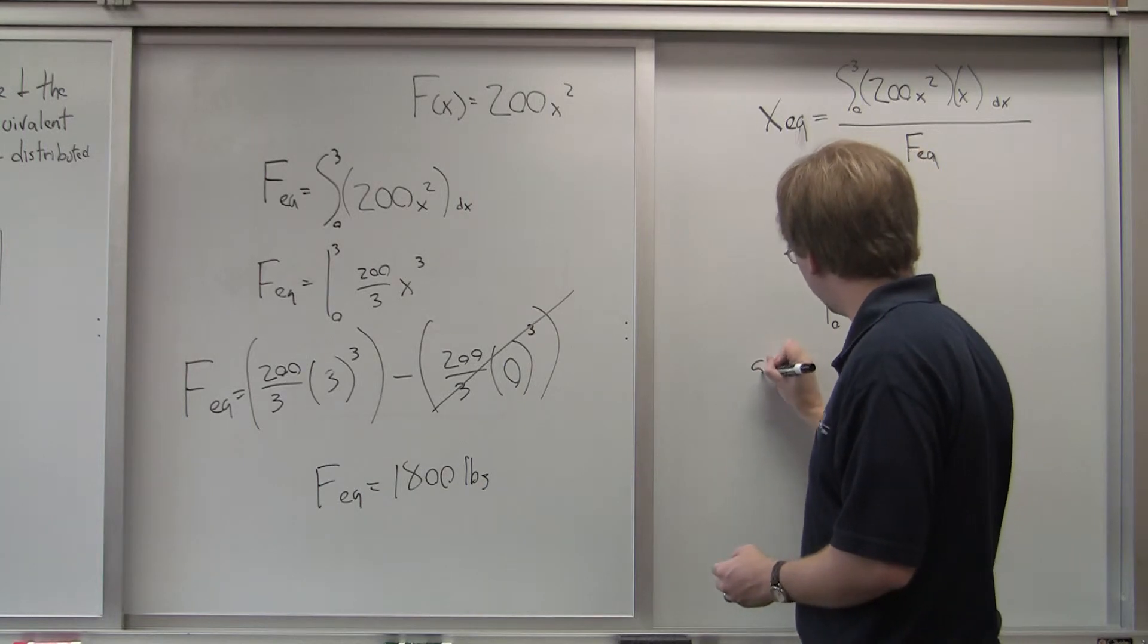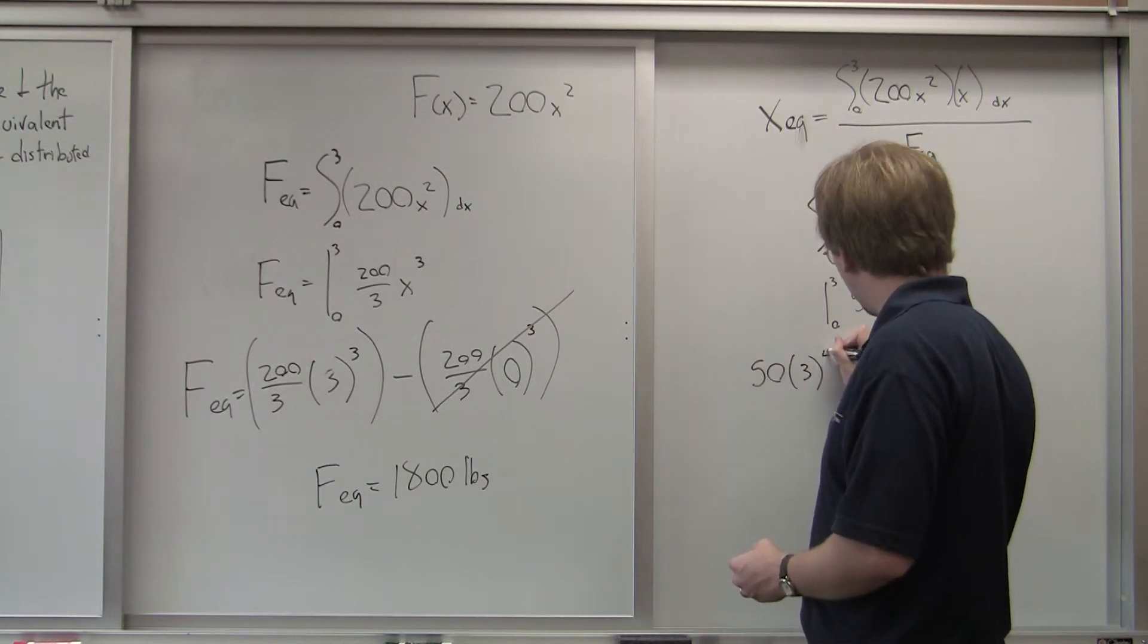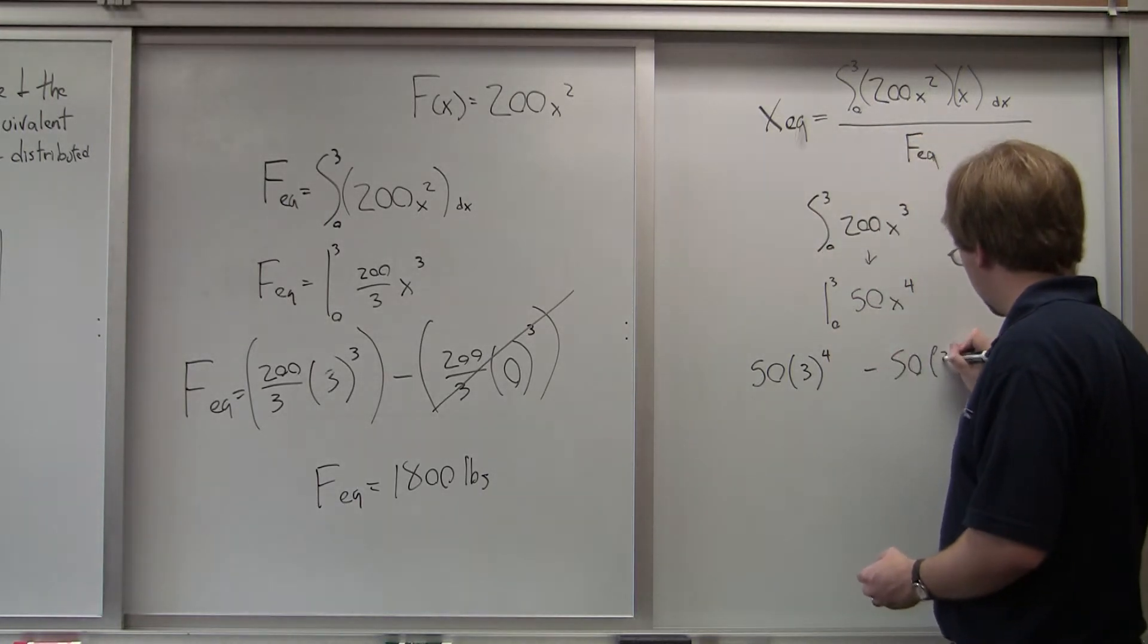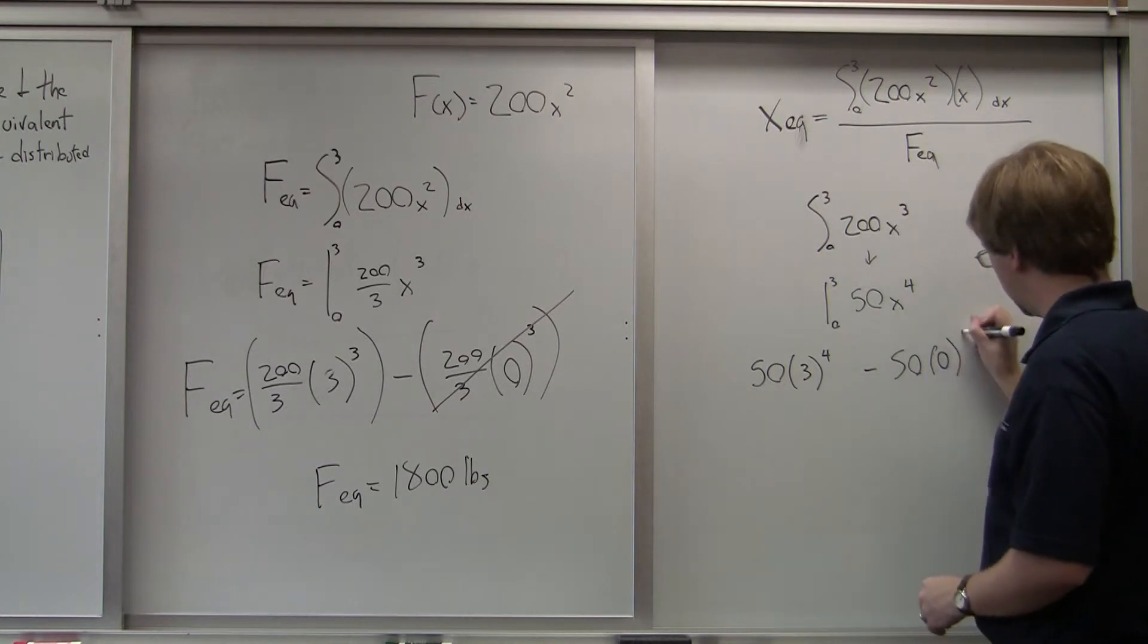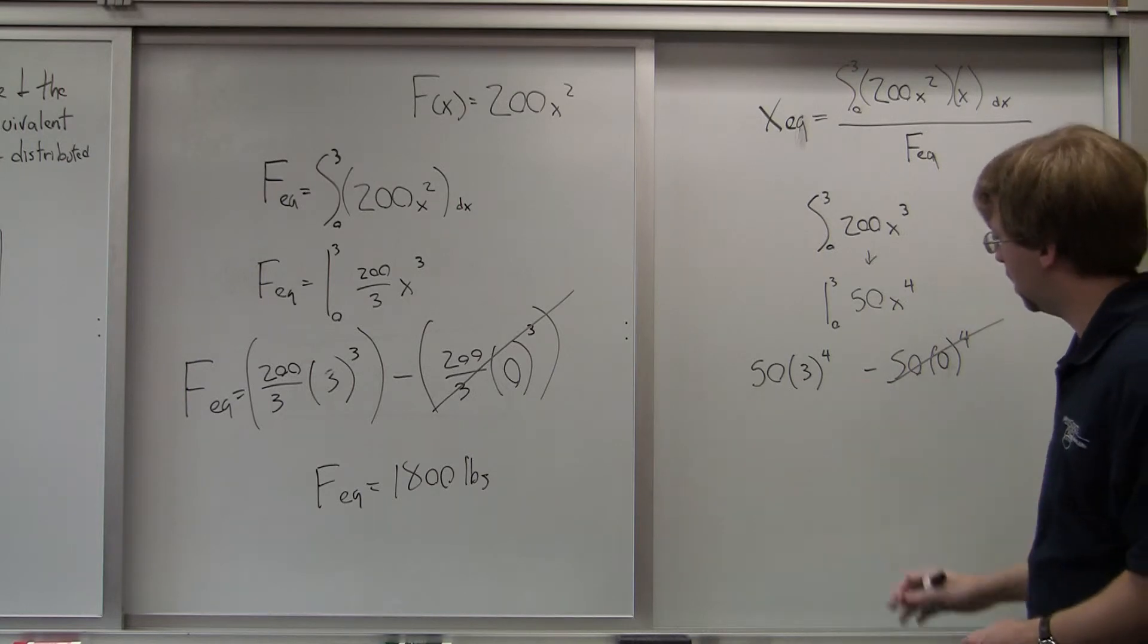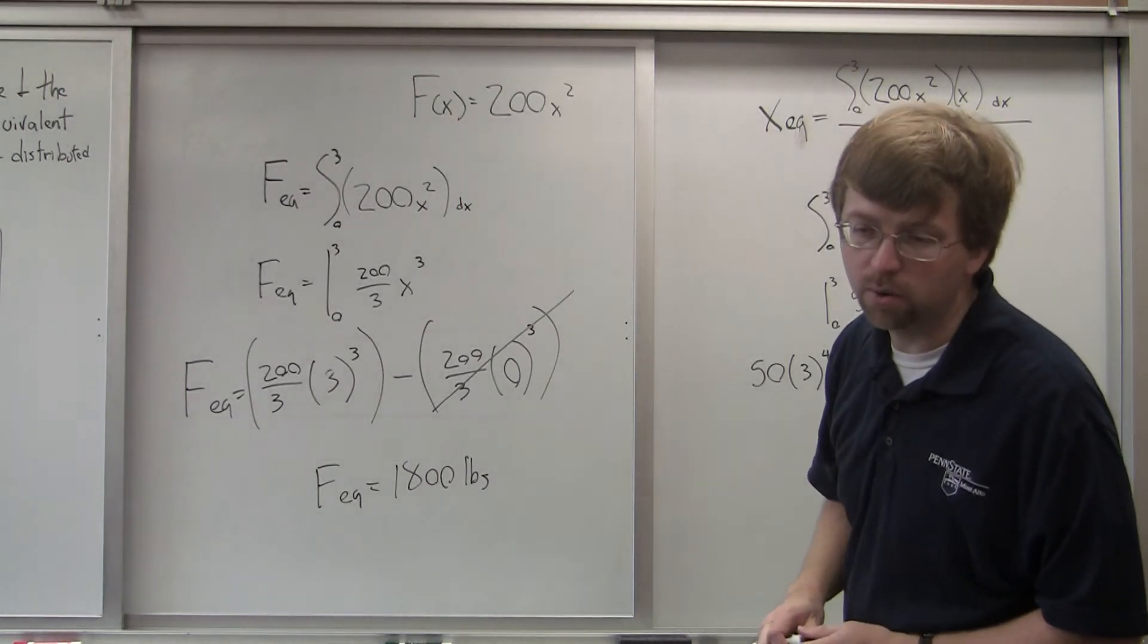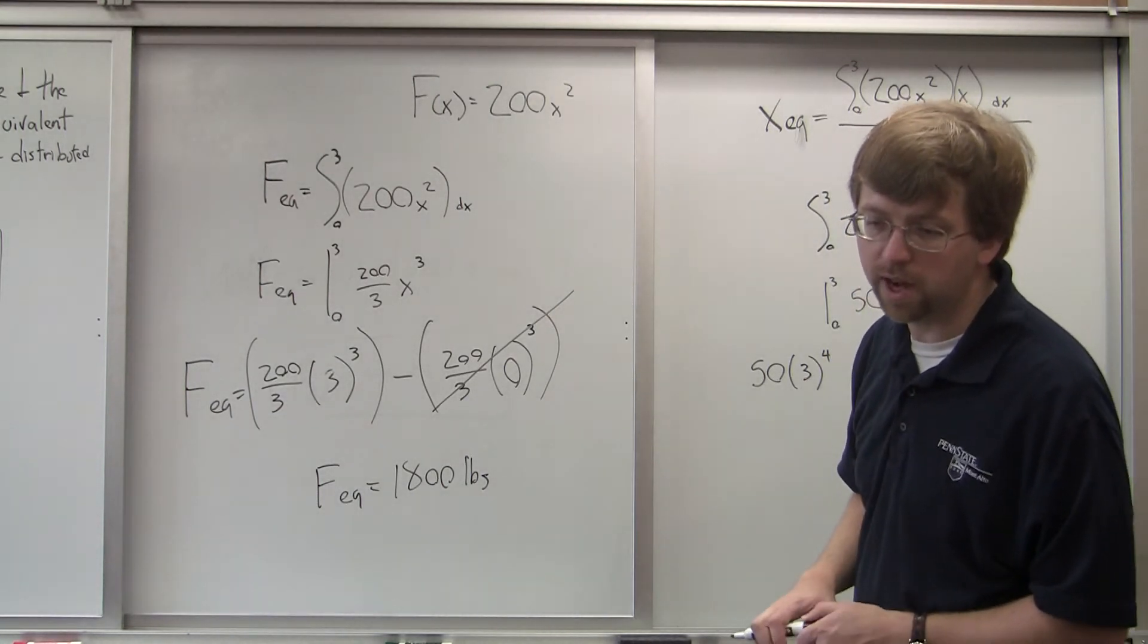This is going to be 50 times 3 to the 4th minus 50 times 0 to the 4th. So again, that's just 0. 50 times 3 to the 4th gives me a value of 4,050.